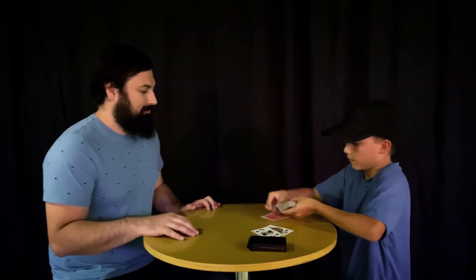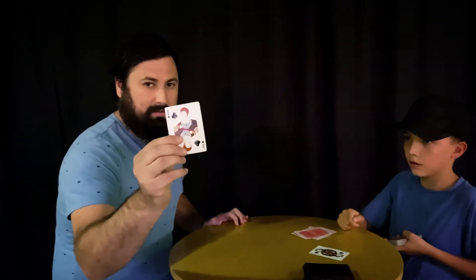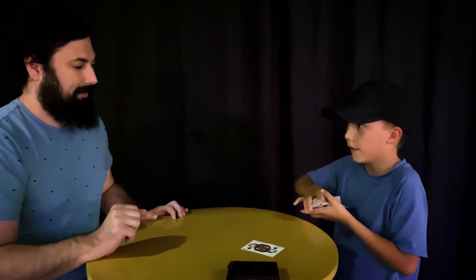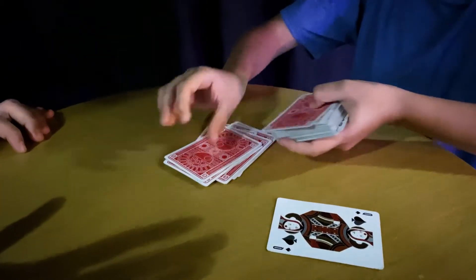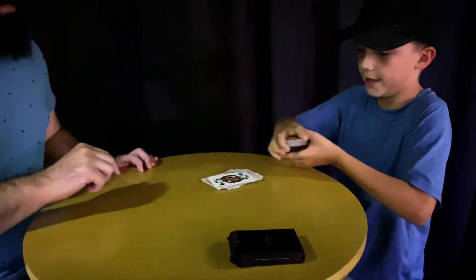I'm just going to deal out cards one by one and I just need you to tell me to stop at any card. Stop. Do you want the queen of spades or the queen of clubs? Let's go with the queen of clubs. We're going to put this queen of clubs right here on top and the rest of the deck here. Now we're going to do that same process again. Stop. We're going to put the queen of spades here.